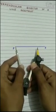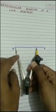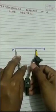Now take your compass and take a distance more than half of the line segment. Placing the tip of the compass on point P, draw an arc above the line segment and below the line segment. Now place the tip of the compass on point S and draw another arc above and below the line segment. Here you can see the arcs intersecting at certain points.